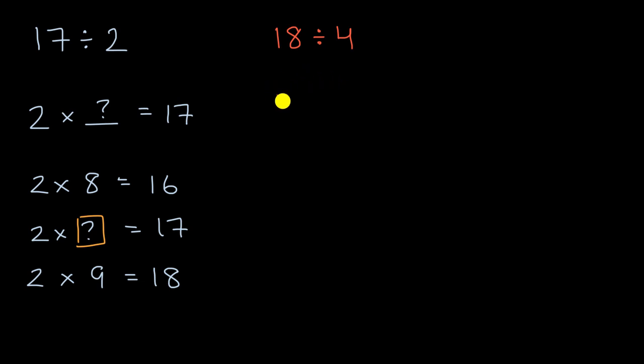Well, we could do something similar. We could say, all right, 4 times 4 is equal to 16. So that doesn't quite get us to 18. We could say that 4 times 5 is equal to 20. So that's more than 18.